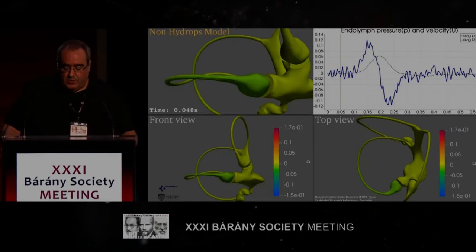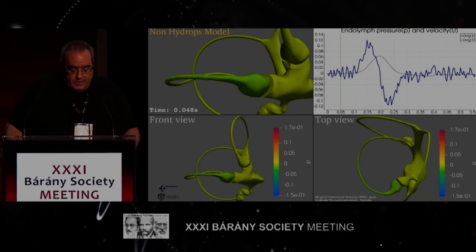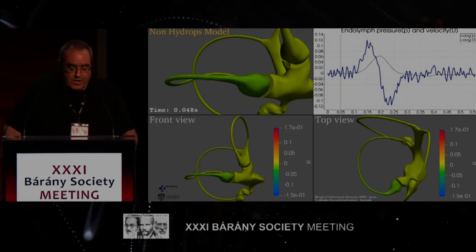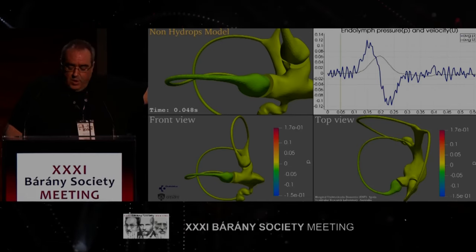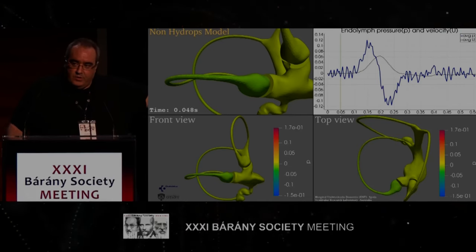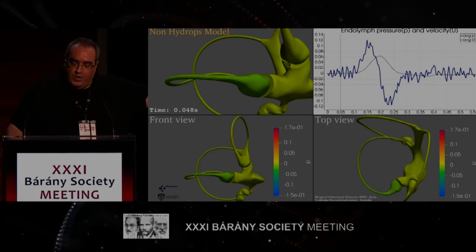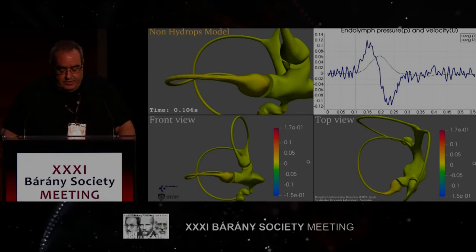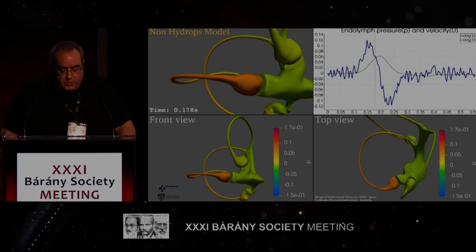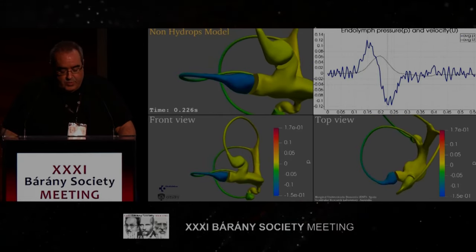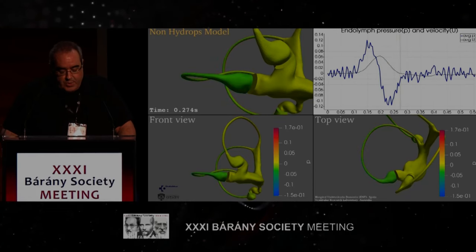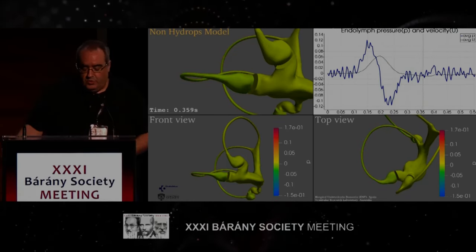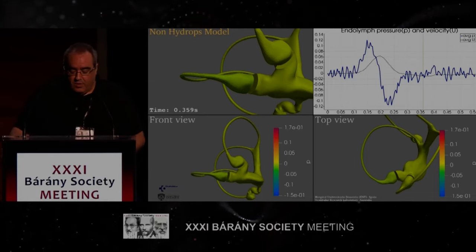These are the computations. We see the pressure in colors representing what happens during a vHIT. You will see what happens to the endolymph during the vHIT test. We have the impulse, the acceleration, a great pressure peak, then the decrease — the brake — another peak of pressure, and we return to normality. This is on the normal model.